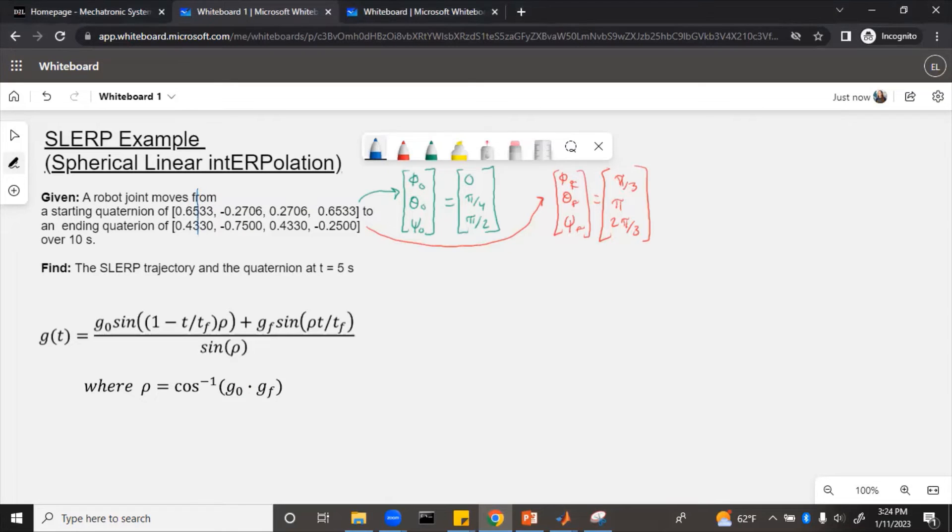To do the dot product, we basically just multiply each set of parameters together and then add them all. So if we multiply each of these, then we need to add them all together. That comes out to be 0.4397. So rho equals cosine inverse of that, which comes out to be 1.1156.